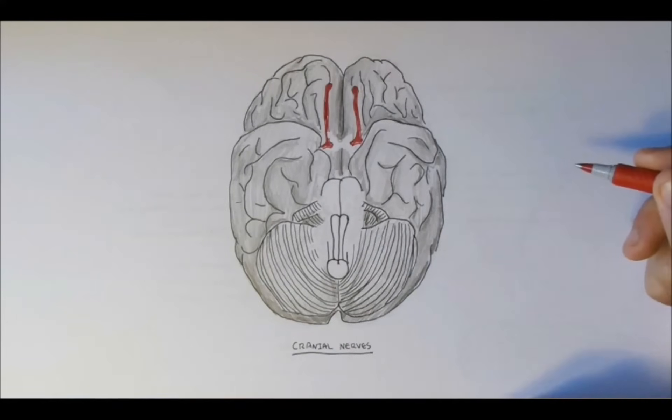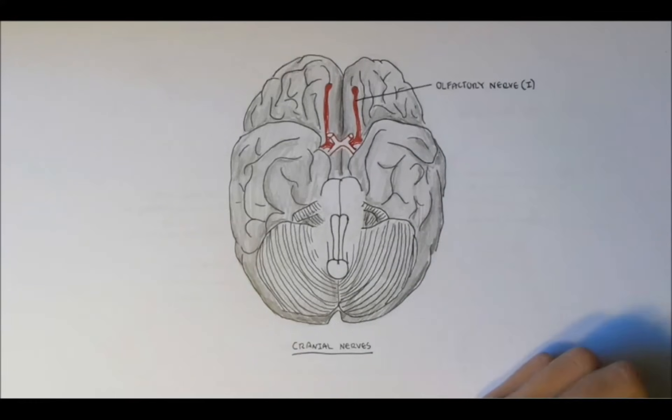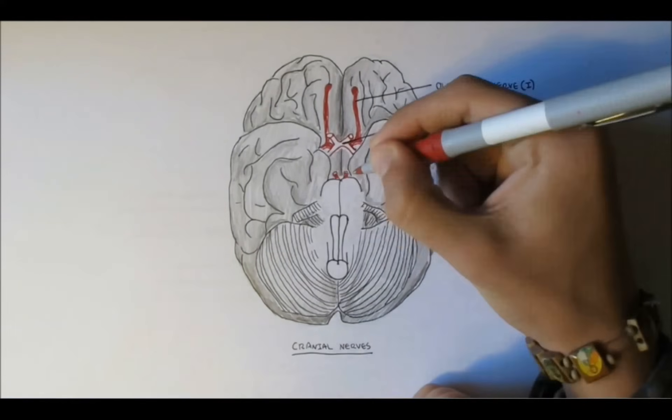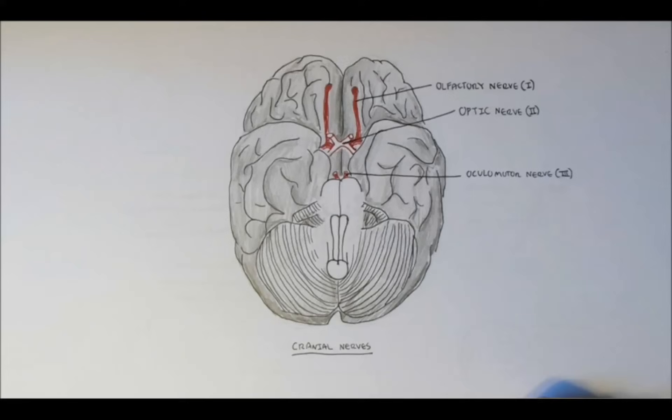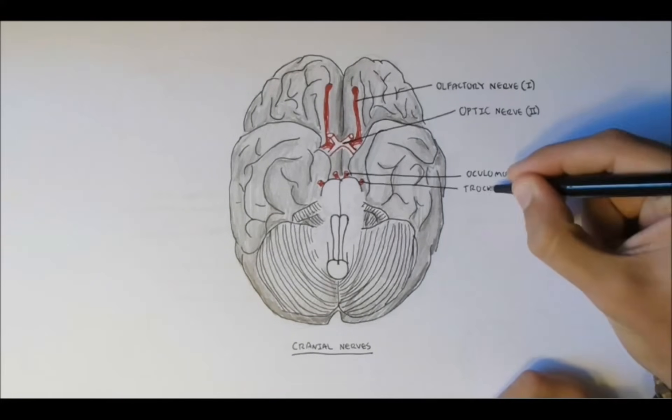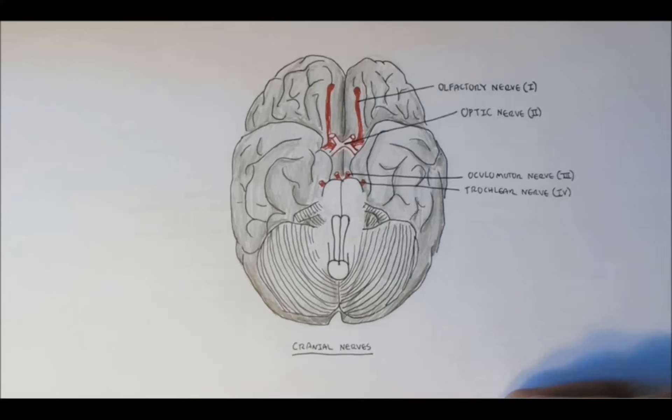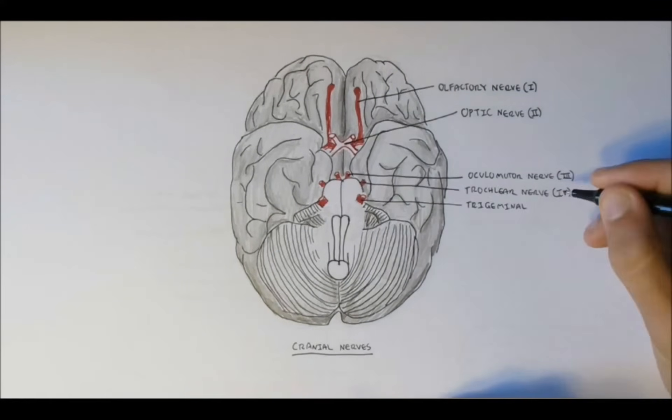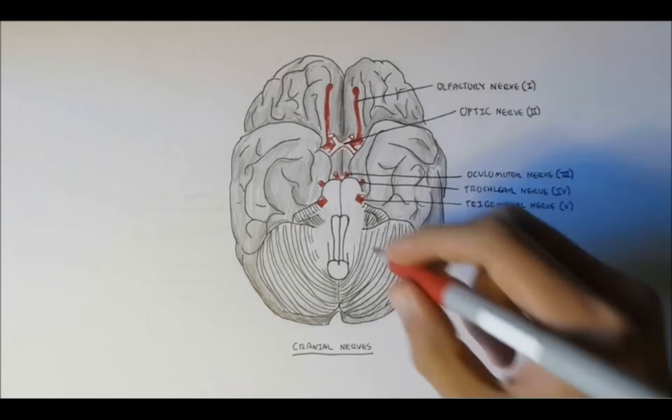Nerve 1 is the olfactory nerve. Nerve 2 is the optic nerve. Nerve 3, the oculomotor nerve. Nerve 4, the trochlear nerve. Nerve 5, the trigeminal nerve. And nerve 6, the abducens nerve.